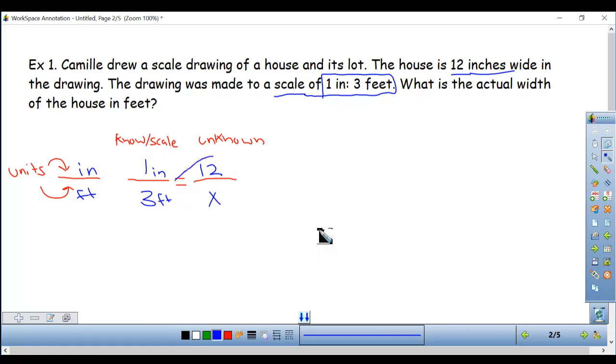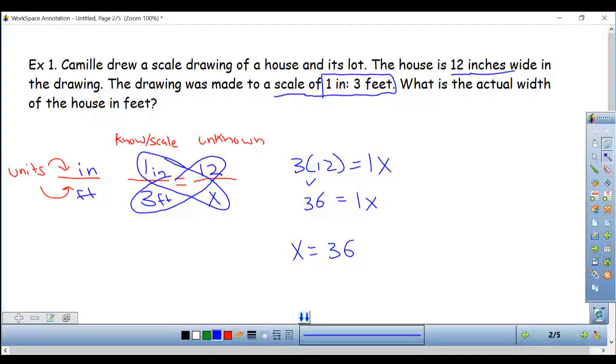And to solve it, I'm going to cross multiply each of these numbers and write it in an equation form. So I've got three times 12. Put an equal sign and that should equal 1x or 1 times x. I don't need to put the 1 there just because it is a 1. If it was any other number I would put it in front of the x. I don't need to but I'm going to do that for the video's purpose today. 3 times 12 is 36 equals 1x or just x and I've got my answer. So my answer is x equals 36 feet. The house is 36 feet wide. That easy.